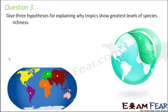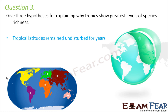Question number three: give three hypotheses for explaining why tropics show the greatest level of species richness. This can be explained with the help of the latitudinal gradient concept. As per the latitudinal diversity gradient (NDG), places present near the equator are more diverse compared to places located at the poles. We have to give reasons why this is so.